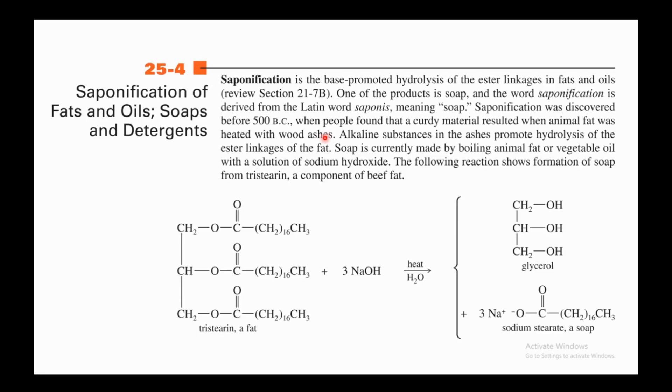Alkaline substances in the ashes promote hydrolysis of the ester linkages of the fat. Soap is currently made by boiling animal fat or vegetable oil with a solution of sodium hydroxide. The following reaction shows formation of soap from tristerine, a component of beef fat.